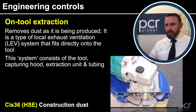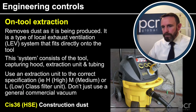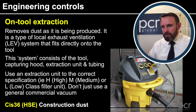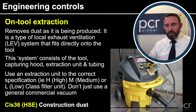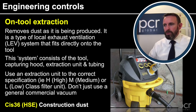The system in total consists of the tool, the capturing hood, the extraction unit, and also the tubing. It takes the dust into an extraction unit, which must be the correct specification — i.e. high, medium, or low — so we must remember that we can't just use a general commercial vacuum. We're going to decide on what actual filtration system to use from our COSHH risk assessment, on tool extraction.